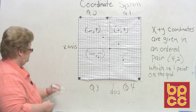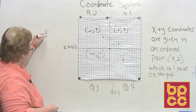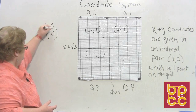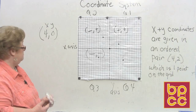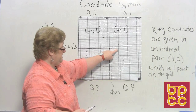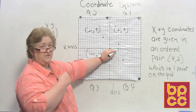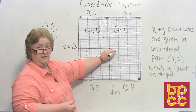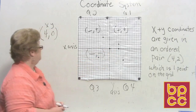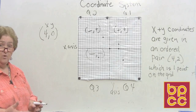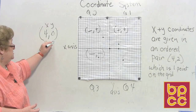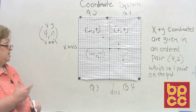Sometimes points don't land in any quadrant. For example, (4, 0): start at the origin, move over four to the right, and then the y says we're not going anywhere — so that point is located on the x-axis, not in one of the quadrants.